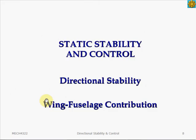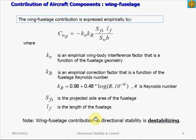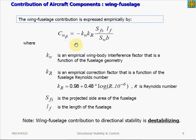Now let's look at the wing-fuselage contribution to aircraft static directional stability and how to compute its Cnβ. The equation describing the Cnβ contribution from the wing-fuselage is obtained empirically — it is not from theory, but is approximated based on experiments and observation. Note that there is a negative sign in the equation, and the remaining terms are generally positive, so the wing-fuselage contribution to directional stability is destabilizing.